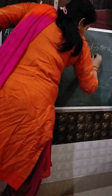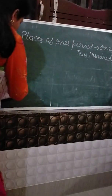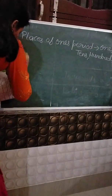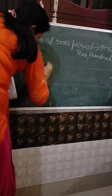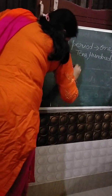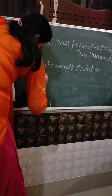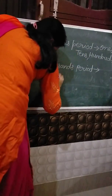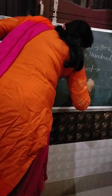The places of the ones period are ones, tens, and hundreds. And the places of the thousands period are thousands and ten thousands.